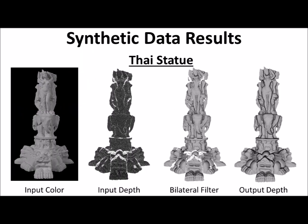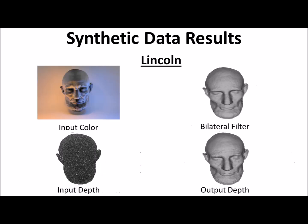The proposed framework was tested on both synthetic data and natural scenes. Here we see the reconstruction of the Thai statue model from the Stanford 3D repository. We are able to recover subtle details such as the elephant's eyes and the wrinkles on the trunk. We can also see the wrinkles in the reconstruction of the Lincoln model taken from the Smithsonian 3D archive.